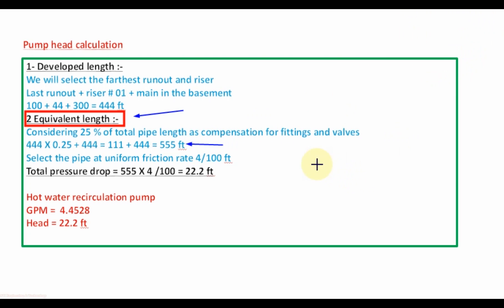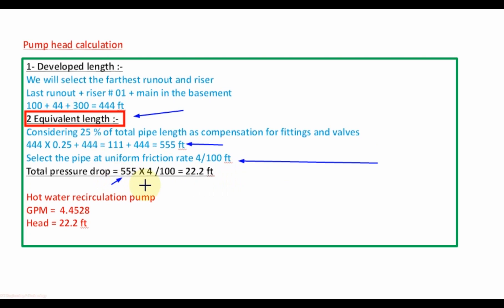We will design the hot water recirculation piping at a uniform friction rate of 4 feet per 100 feet. The total pressure drop equals the equivalent length of 555 feet multiplied by the friction loss rate of 4 feet per 100 feet, giving a total pressure drop of 22.2 feet.